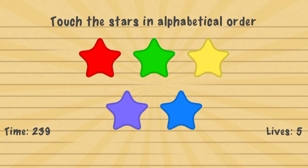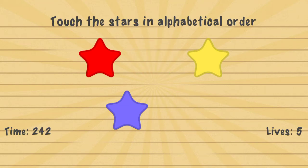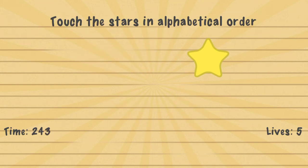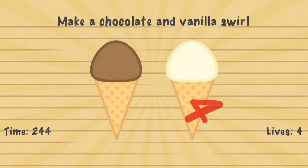Touch the stars in alphabetical order: blue, green, purple, red, yellow. Sometimes if you tap the yellow one you'll lose a life — I have no clue why.